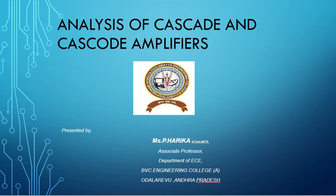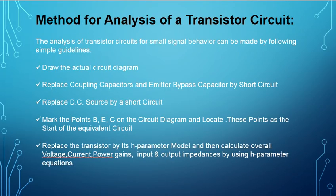Now we see the method of analysis of a transistor circuit — how to analyze transistor circuits. Transistor circuits can be analyzed based on the signal, specifically based on frequency: small signal low frequency analysis and small signal high frequency transistor analysis. So in the cascade and cascode amplifiers, we go with the small signal low frequency analysis, because these are used at the audio frequency range.